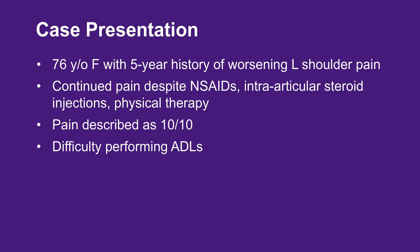This patient is a 76-year-old female with a 5-year history of progressively worsening left shoulder pain. She has been treated with different non-operative measures including anti-inflammatory medication, two intra-articular steroid injections, as well as physical therapy. At the present time, she describes the pain level as a 10 out of 10, and has difficulty performing everyday activities including overhead lifting or pushing and pulling.